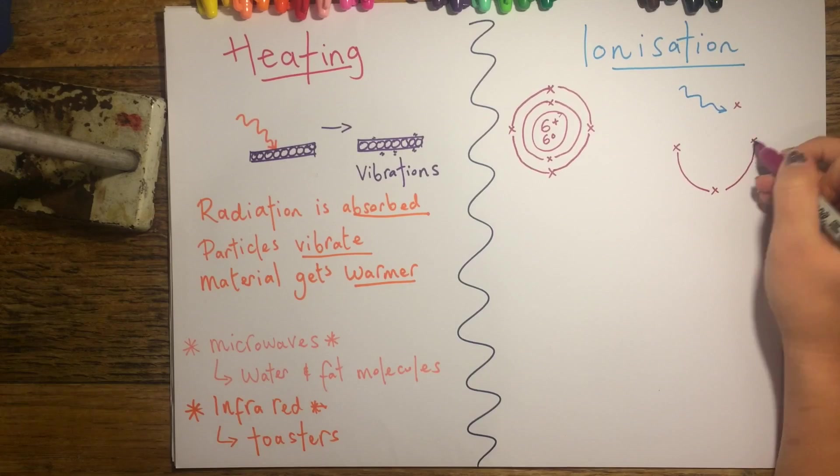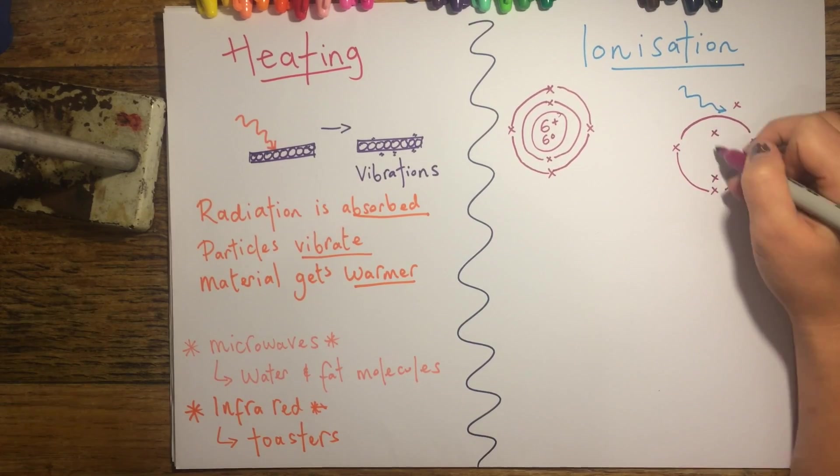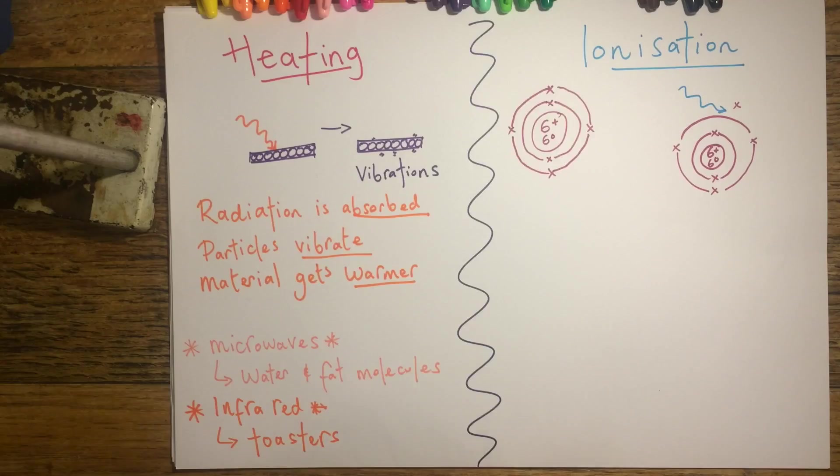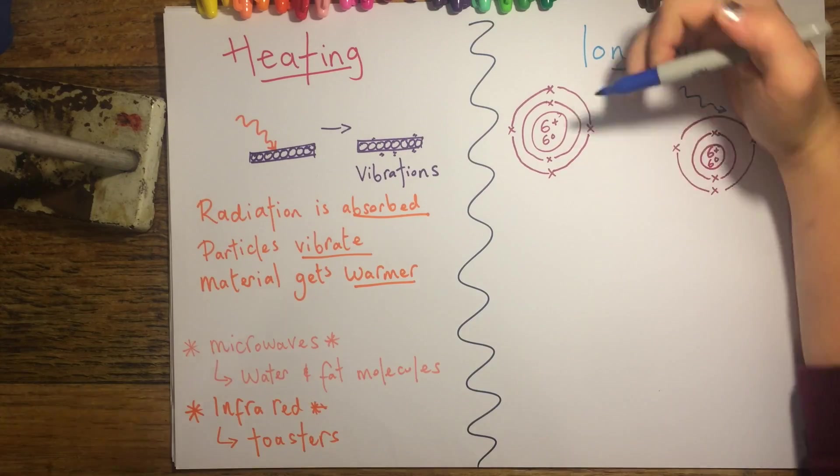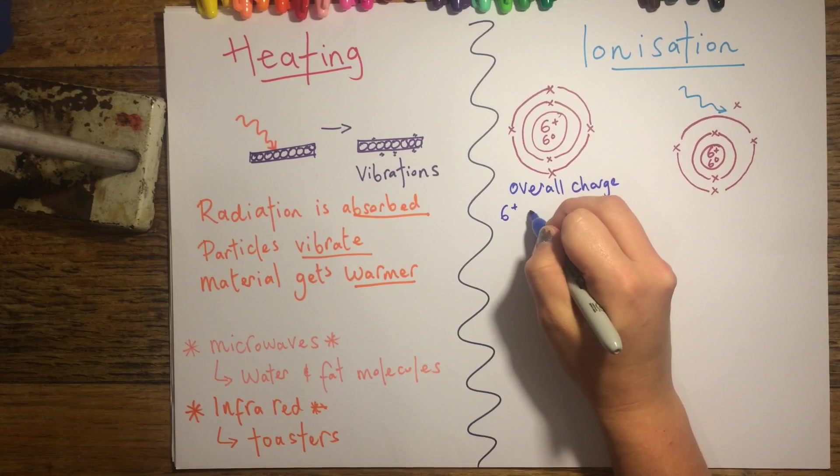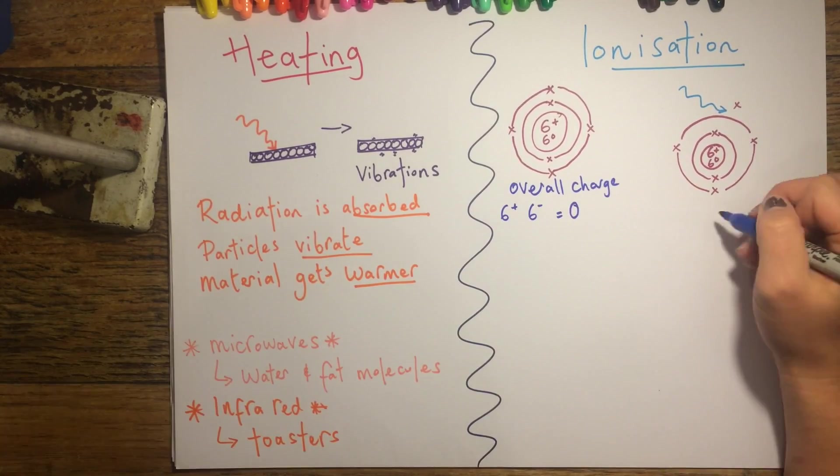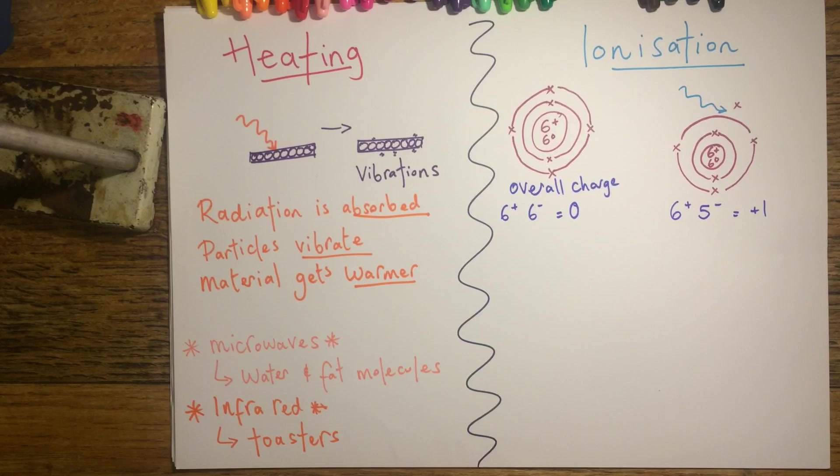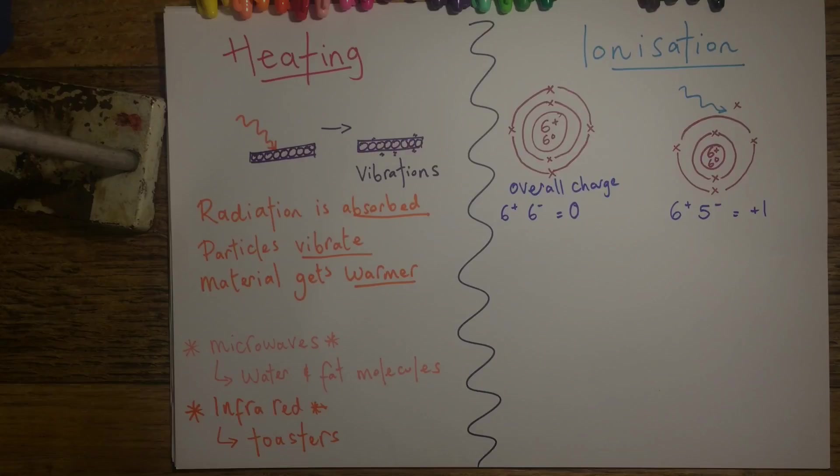In ionisation there's an interesting effect that happens when the charge on the atom is changed. If we consider the atom on the left hand side, this has six protons and six electrons, so therefore its overall charge is zero. On the right hand side though, a photon has taken out one of these electrons and it has six protons and five electrons, so an overall charge of plus one.